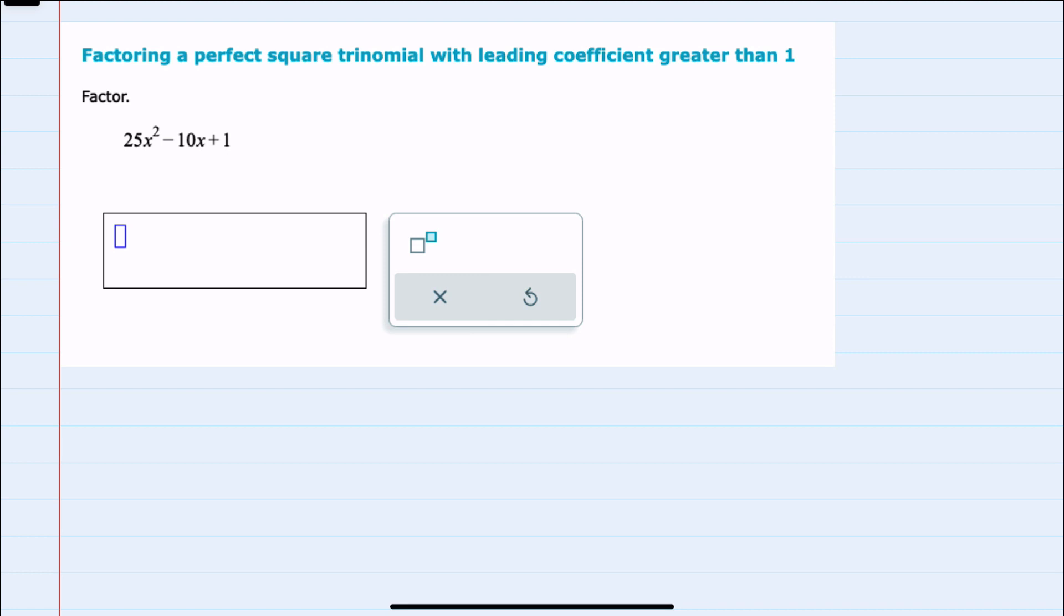I can factor these with trial and error or the AC method just as we have before, but since we're told it's a perfect square trinomial,